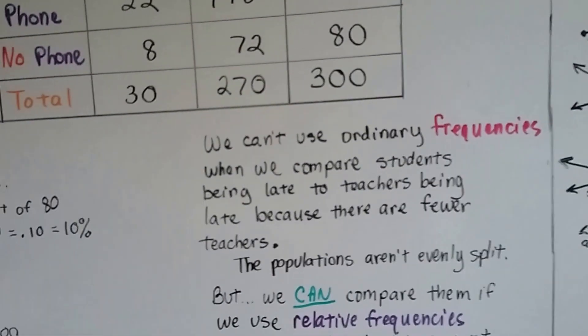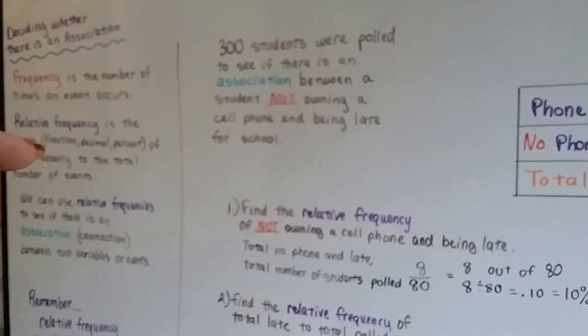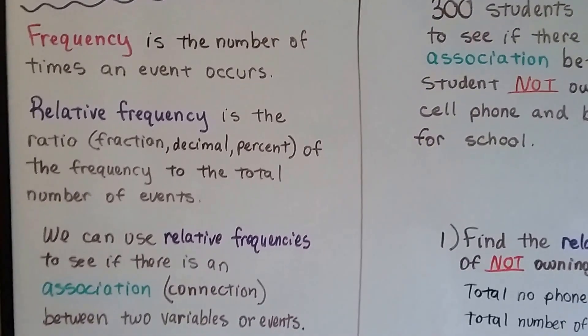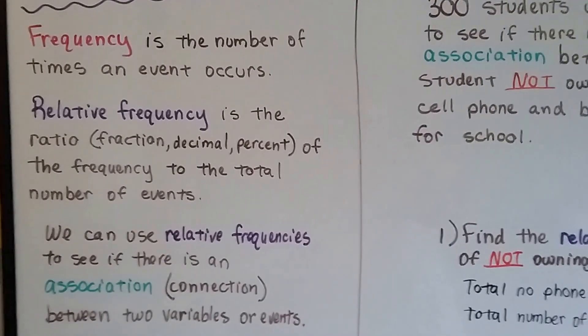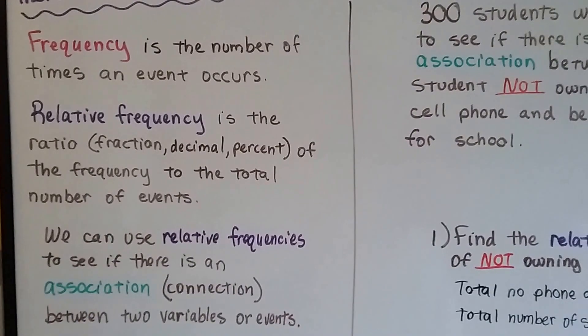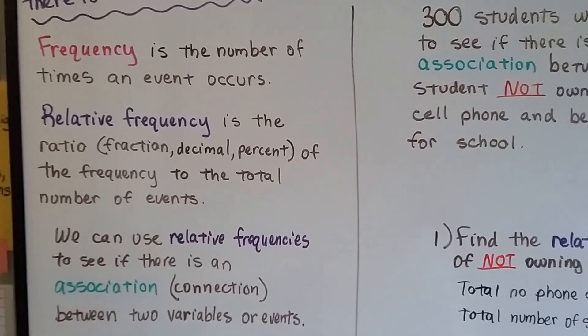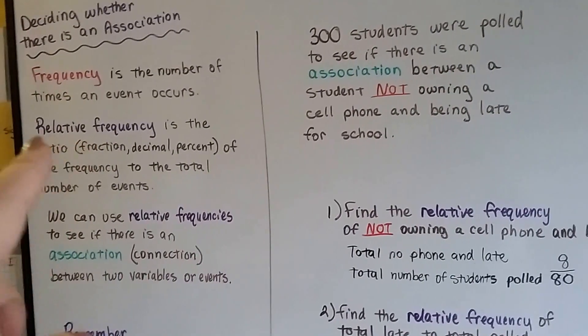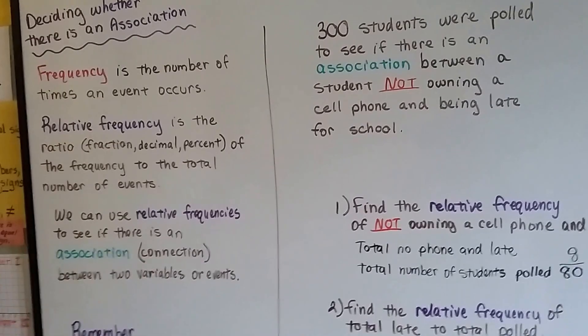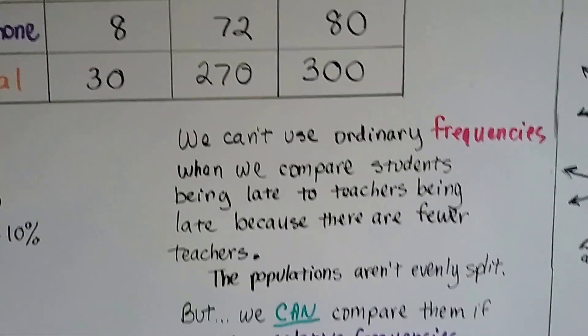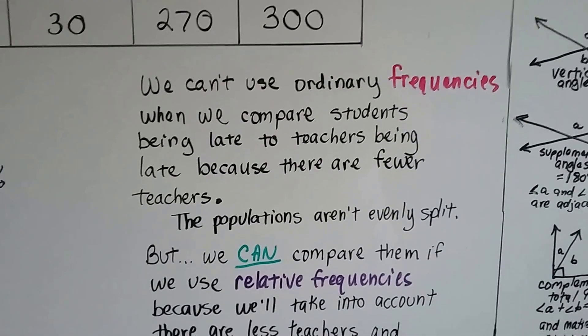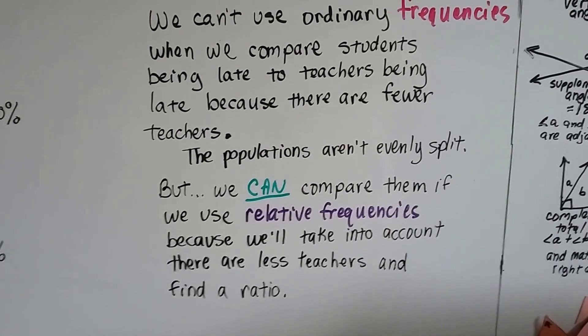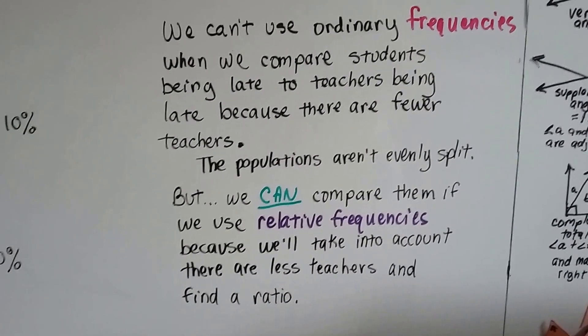We can't use ordinary frequencies. Remember, in the beginning, we talked about there's frequencies and there's relative frequencies. Frequency is the number of times an event occurs. Relative frequency is the ratio of the frequency to the total of events. So, relative frequency compares how often it happened to how many total happened. Frequency is just how many times it happened. There's no comparison. So, the minute we do relative frequency, we're trying to find a relation in the frequency. So, relative relation. We can't use ordinary frequencies when we compare students being late to teachers being late because there's fewer teachers. It's not fair. And the populations aren't evenly split. But we can compare them if we use relative frequencies because we'll take into account that there's less teachers and we'll find a ratio.